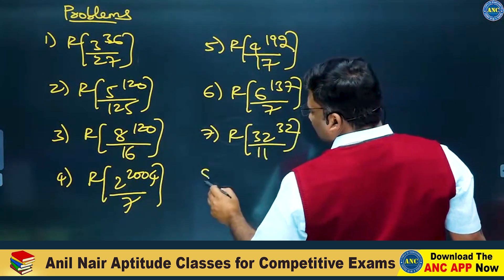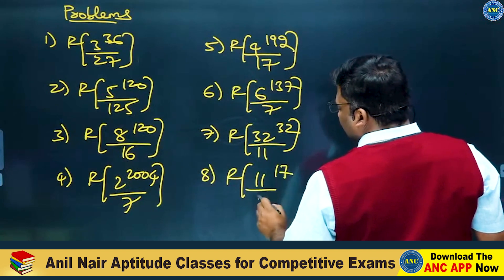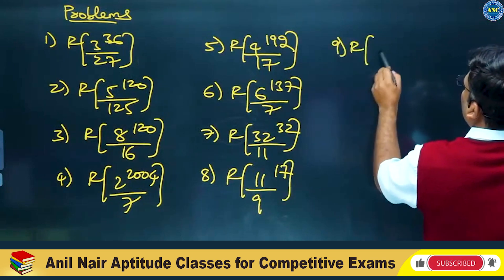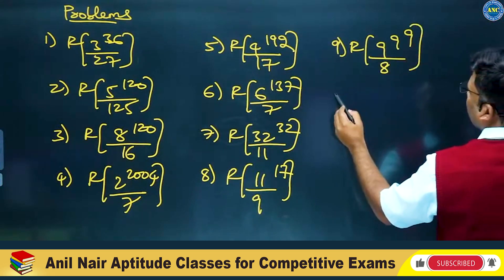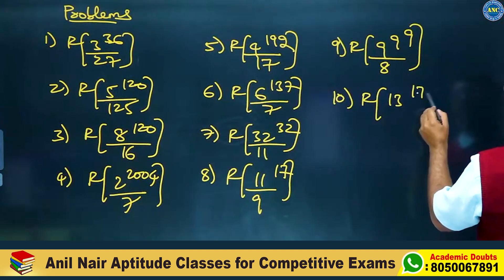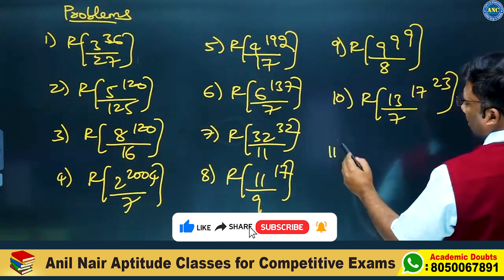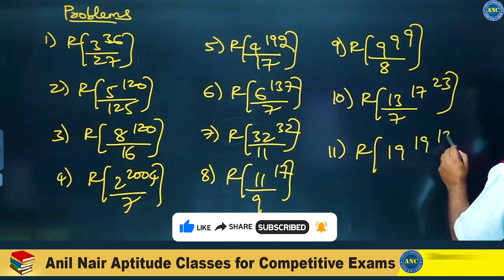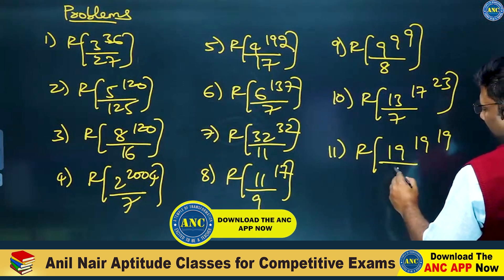11 power 17 divided by 9. 9 power (9 power 9) divided by 8. 13 power (17 power 23) divided by 7. 11. 19 power 19 divided by 8.